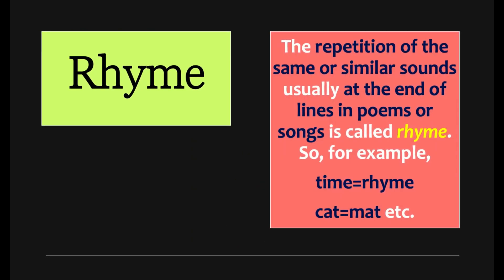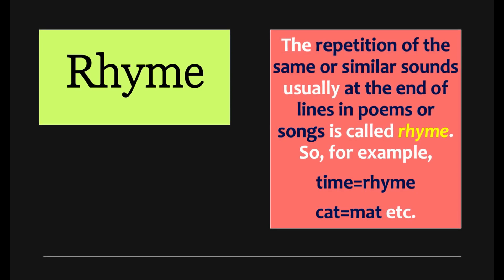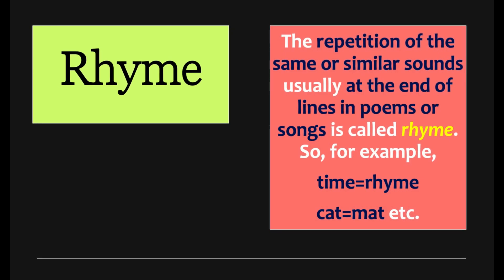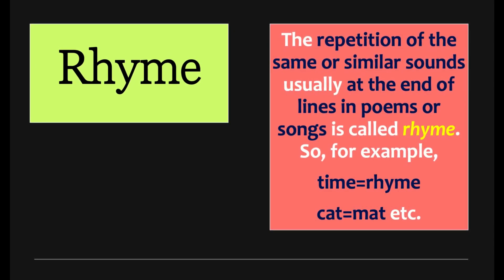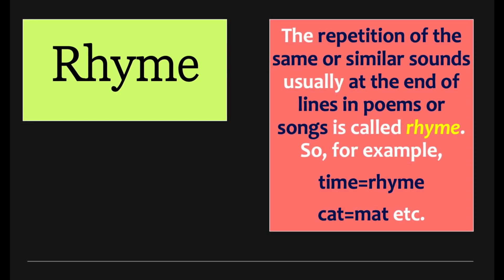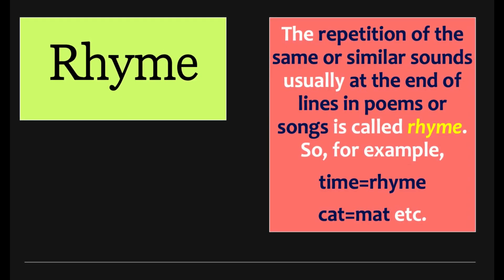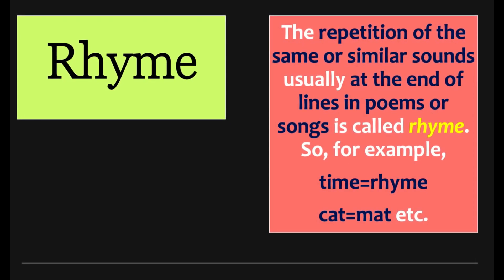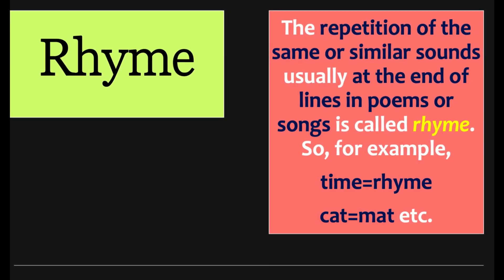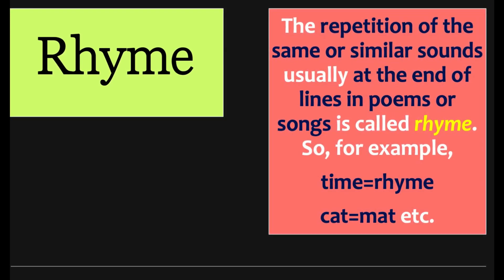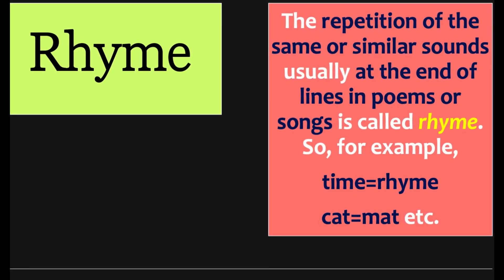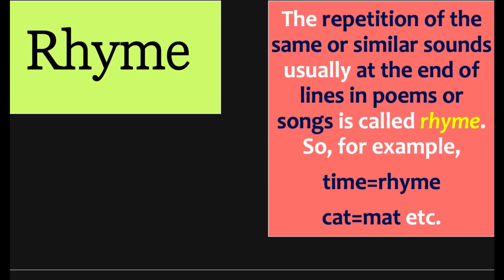Moving to 'rhyme.' The repetition of the same or similar sounds, usually at the end of lines in poems or songs, is called rhyme. For example: time, rhyme, cat, mat, hat, bat, and so on. Rhyme creates melody — the repetition of the same or similar sounds at the end of lines in a poem or song creates rhyme and melody.